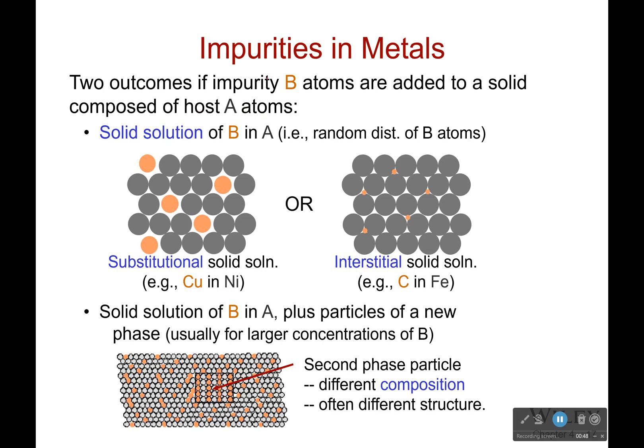When we put some atoms of B in there, there are two possible cases. One is a solid solution where B is taking the place of A atoms, and that'll usually be some sort of random distribution. This is like copper and nickel — copper is slightly smaller than nickel, but they're close enough in size. There's going to be a little bit of stress because the surrounding atoms will push in toward the copper atom since it's slightly smaller. That's why bronze is stronger than copper or nickel.